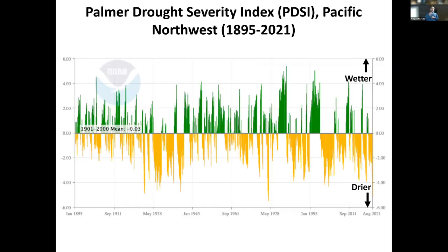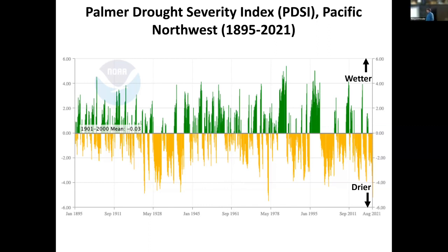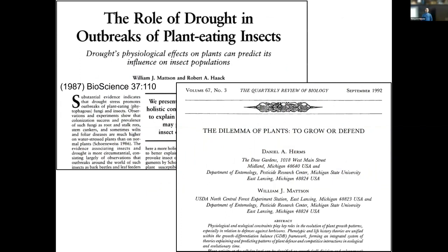Now I want to switch gears and talk about drought — something we're getting more used to in the Pacific Northwest. We used to water just our gardens and tomatoes; now we're watering our trees. I've lost a couple of hemlocks over the years living in Snohomish County. Historically, going back to 1895, we see wetter years and drier years, and we've been in more of a drier period. There's a lot of research on the role of drought in insect outbreaks. Drought stresses plants, and stressed plants are less likely to defend themselves.